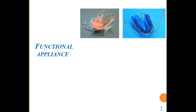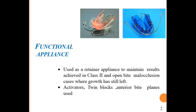Functional appliances can also be used as retainers. They are used to maintain results achieved in Class II and open-bite malocclusion cases where growth is still remaining. After functional appliance therapy for mandibular deficiency cases, the same functional appliance can be used as a retainer. Activators, twin blocks, and Herbst bite planes can be used as retainers in those cases.